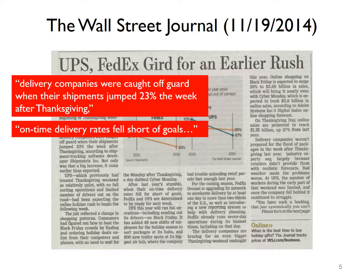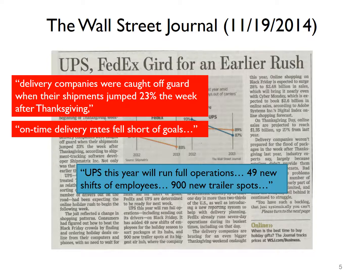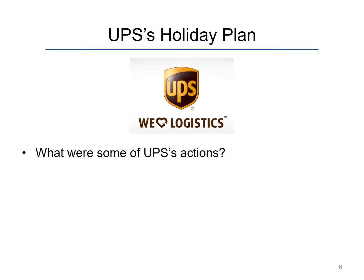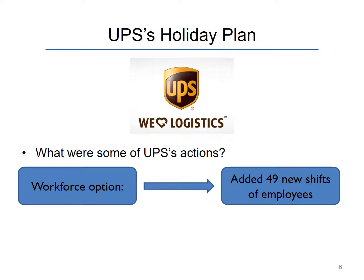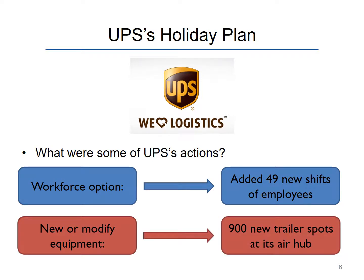This was a big problem for UPS and FedEx because these are their key service measures. Fast forward a year later: UPS added more shifts and employees, and added new trailer spots. In anticipation of this greater demand, UPS increased their workforce capacity — adding 49 new shifts of employees — and added nine new trailer spots at its main air hub, so they could meet the increased demand toward the late November period.